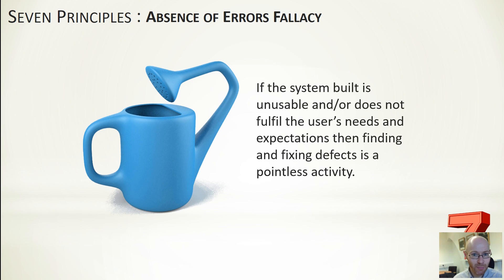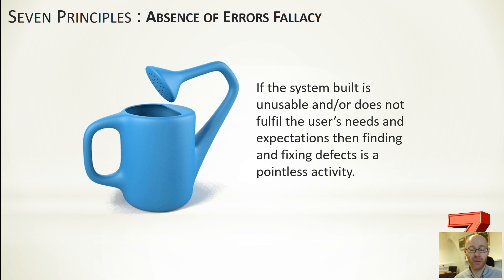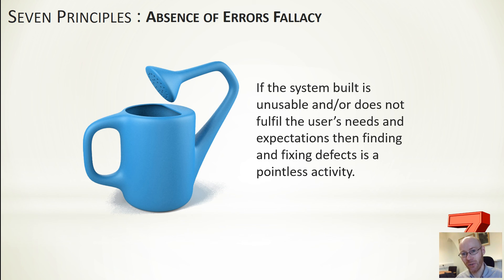The absence of errors fallacy is the last principle. Whilst testing may show no bugs, ultimately you need to create software that is usable and useful to the user. If you create bug-free software that isn't actually useful, it's pointless. The key thing to get right is that you have useful software — that's why user acceptance testing is so important. If the software isn't useful, who cares about bugs, because it simply won't be used.